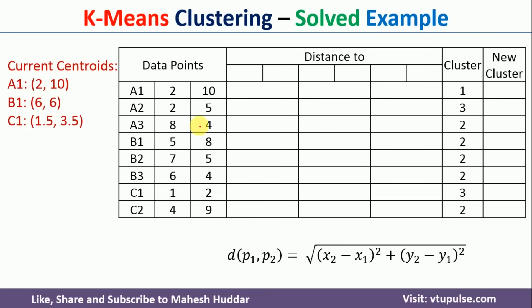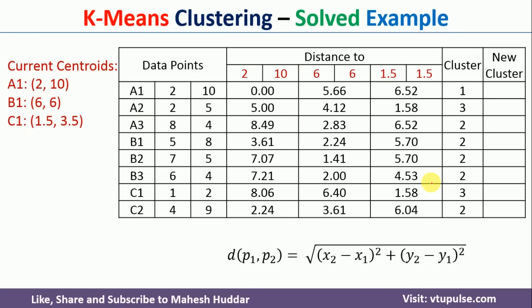We now consider these new centroids as the current centroids and recalculate distances from all data points to these centroids using the same Euclidean formula. After checking which distance is smallest, we assign each data point to its nearest cluster. Notably, C2 was previously assigned to cluster 2 but is now assigned to cluster 1 — meaning a data point has moved from one cluster to another, so the algorithm has not yet converged and we must calculate new centroids again.